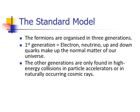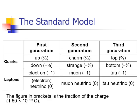The second and the third generations are only found in high energy collisions that happen either in particle accelerators or in the naturally occurring cosmic rays. They're the particles from space that then collide with each other and create many of these particles.